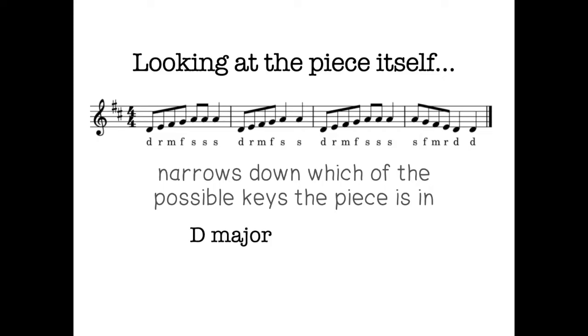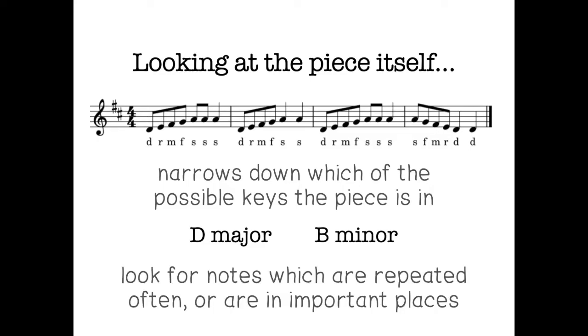So we know that it could be D major because we just did all those steps. And the other one was B minor. So to find out which it is, we need to look for notes that are repeated often or that are in important places. And now we've learned a little bit more. We know that there's two notes for each one that we can look for. We can look for the home note, but we can also look for that note number five as well. And that just helps us have a few more clues.